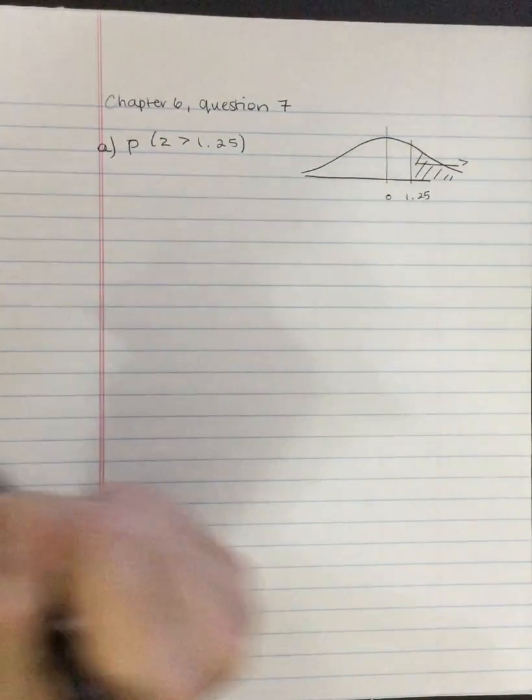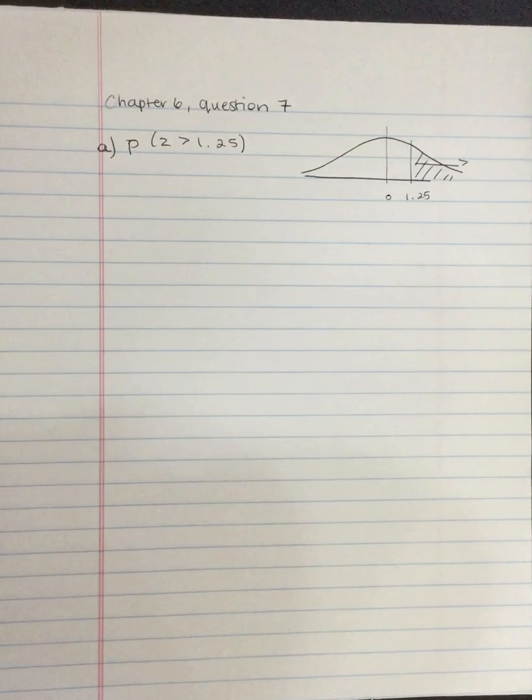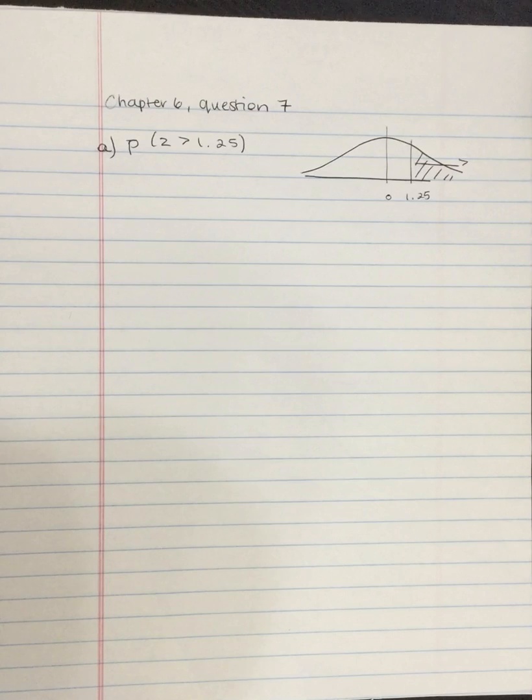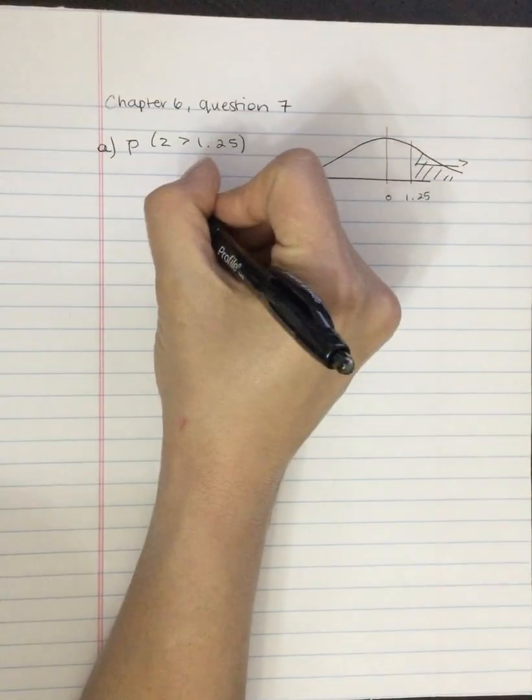So what we're going to do is we're going to go to the unit normal table. We're going to look up 1.25 in column A, and we're going to go across to the tail, which is in column C. And we are going to see that that probability is 0.1056.